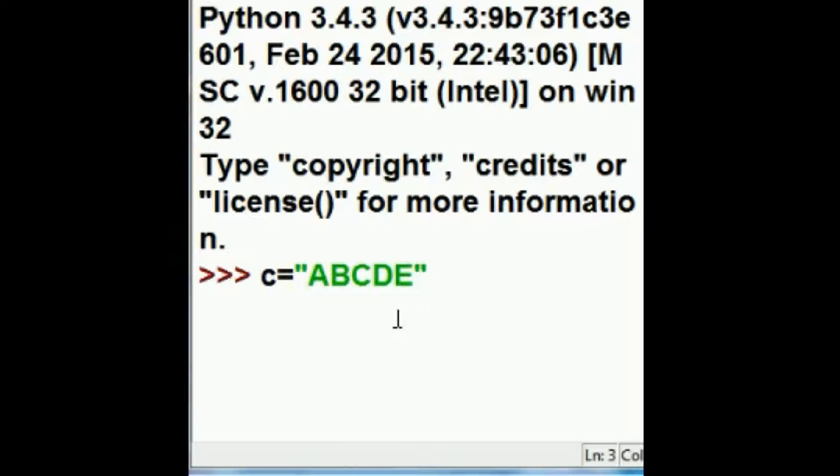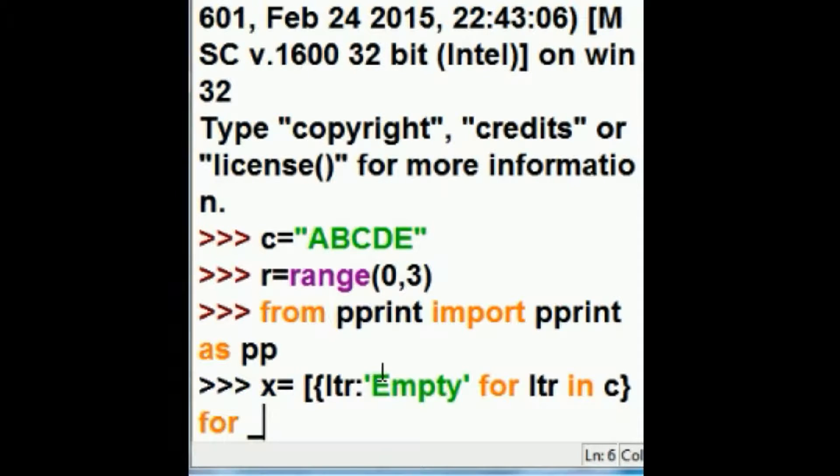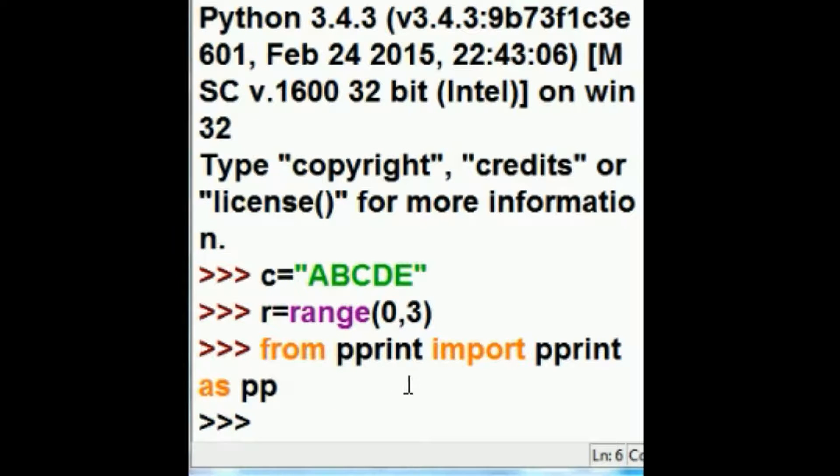So these are the chairs. C chairs equals A, B, C, D, E. The rows R will follow a range of 0 to 3. We'll use pretty print from pprint, import pprint and we'll refer to it as pp.